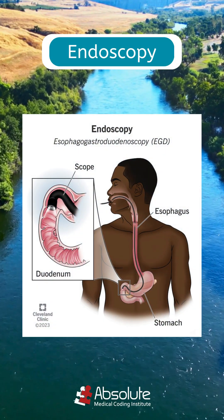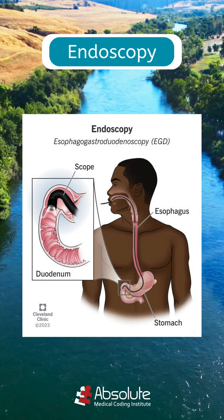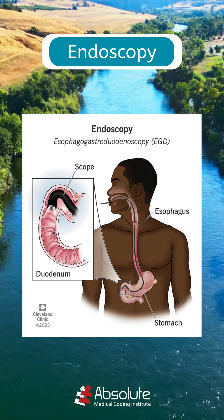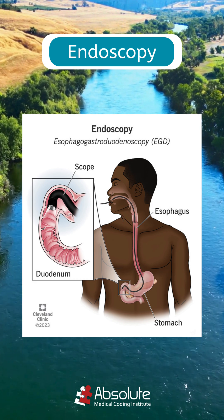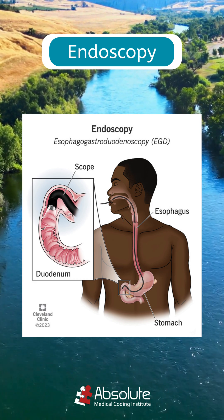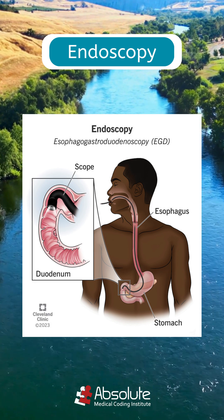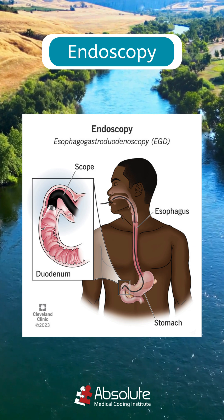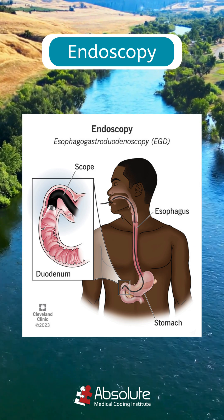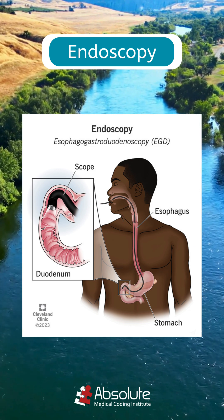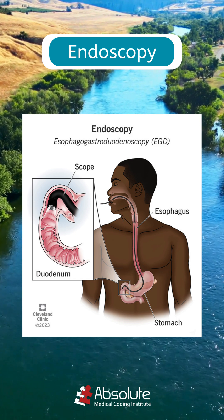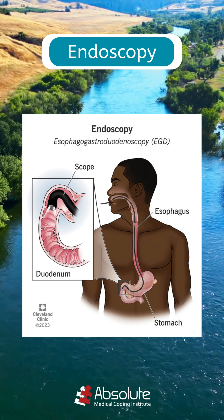Did you know that there are many different types of endoscopies? For example, a colonoscopy is a common type, where a gastroenterologist uses a scope to check your large intestine for abnormalities.